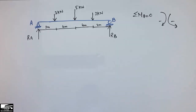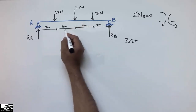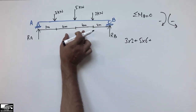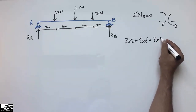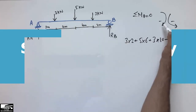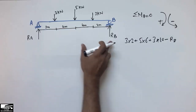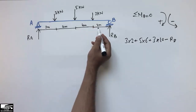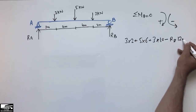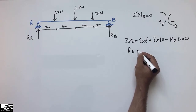Taking the summation of moments: 3 into 2, then 5 into 6, then 3 into 10. RB is taken as negative (anti-clockwise direction), with its moment arm equal to the whole distance of 12 meters. Setting the summation of moments equal to 0: RB into 12 is taken to the right side.